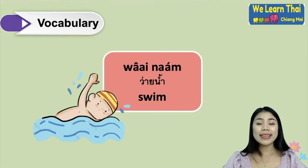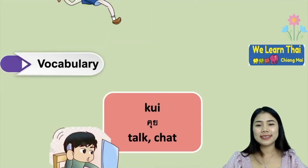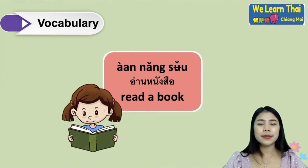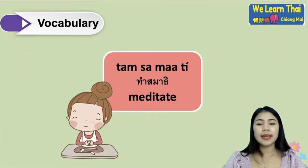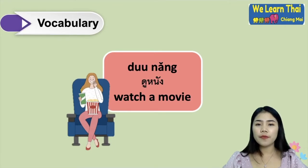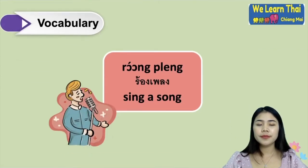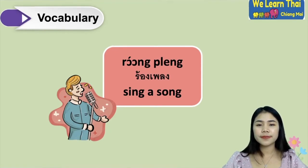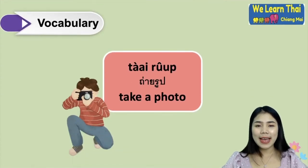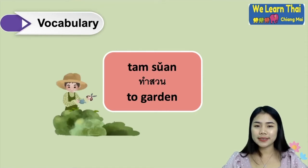Now let's talk about vocabulary. 'Wâi nám' means swim. 'Wing' means run. 'Kui' means talk or chat. 'Nang sü' means read a book. 'Tham samati' means meditate. 'Duu nang' means watch a movie. 'Fang' means listen to music. 'Rong phleng' means sing a song. 'Wad rûup' means draw a picture. 'Thâai rûup' means take a photo. 'Tham suan' means to garden.